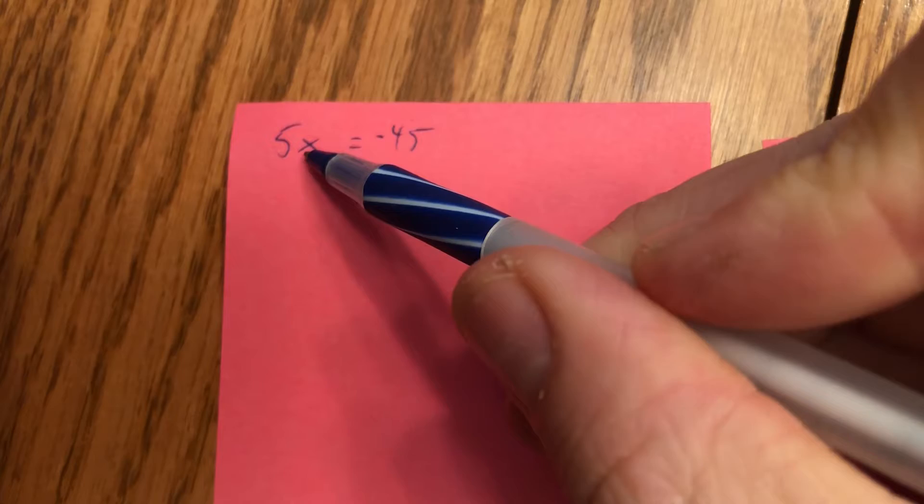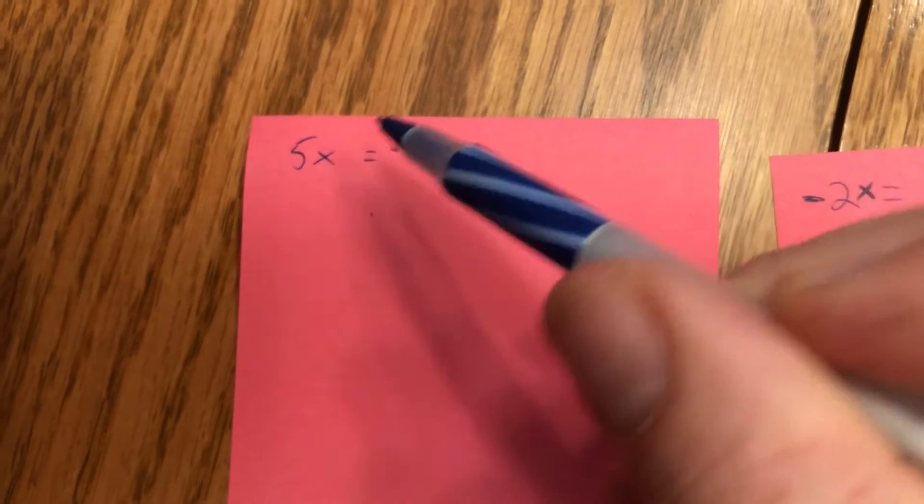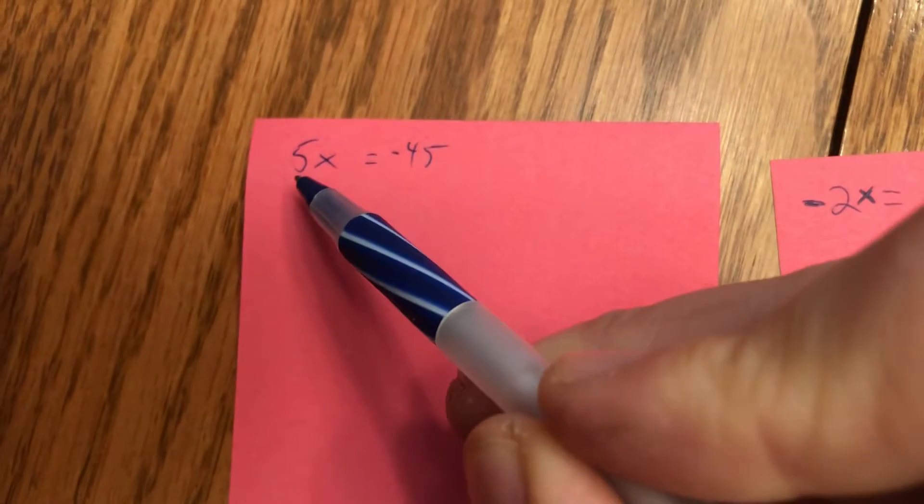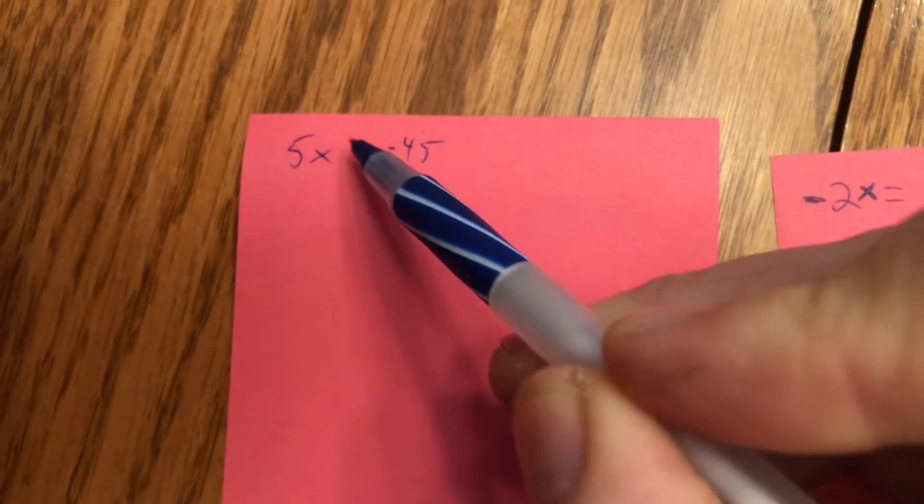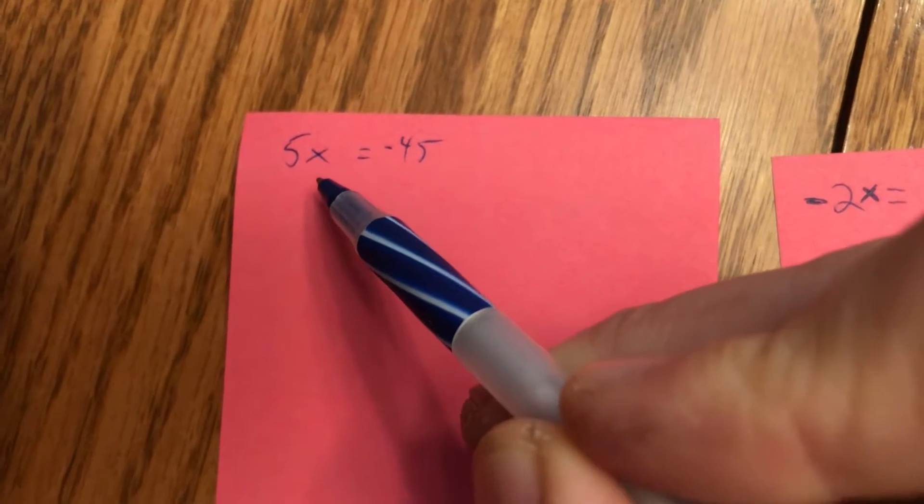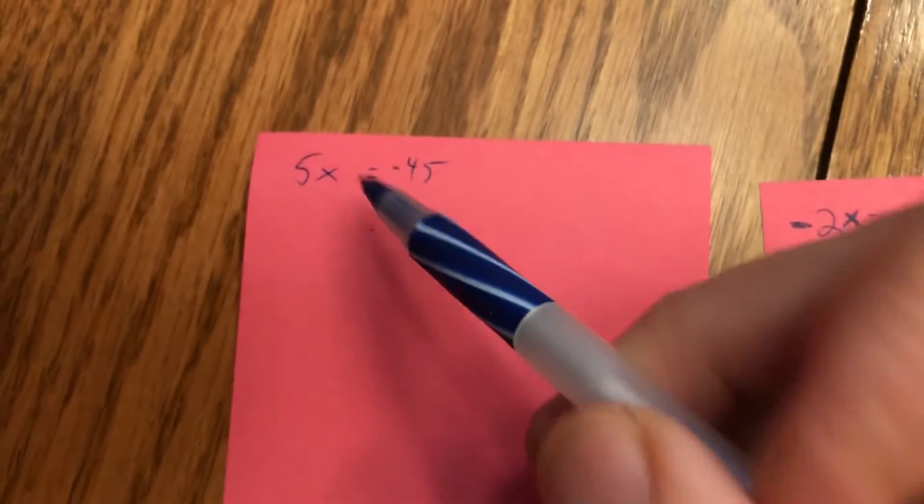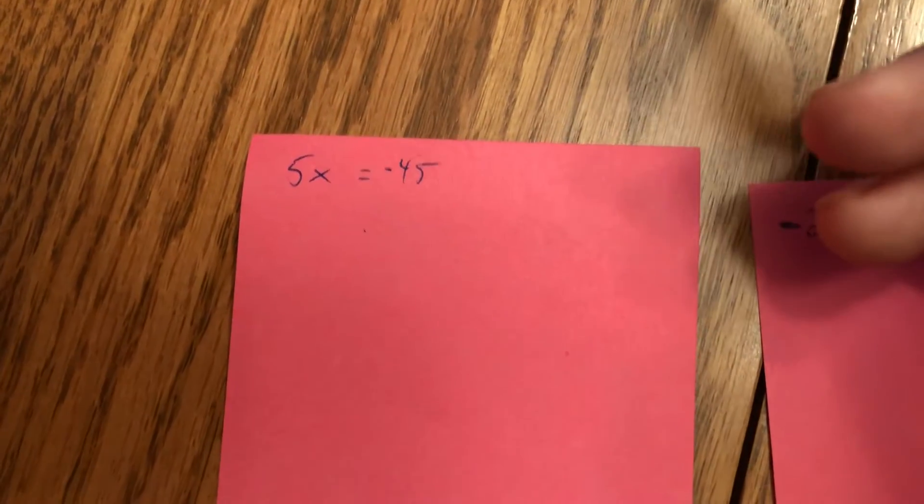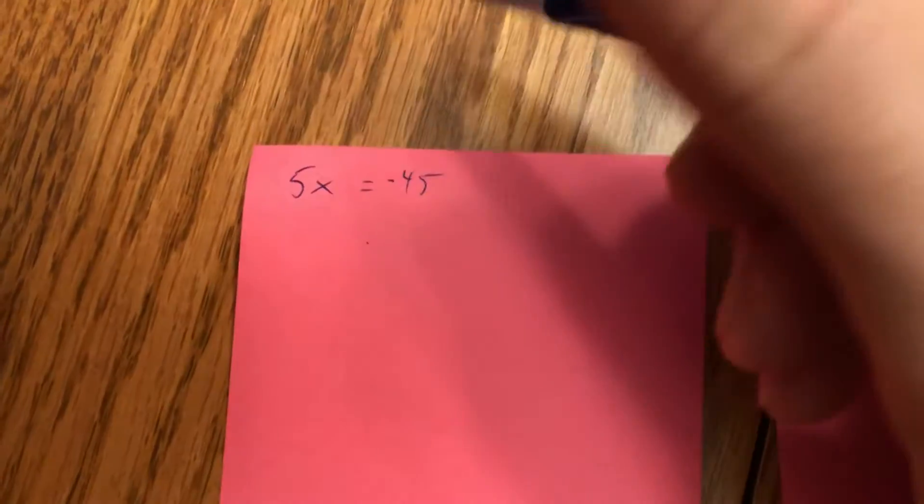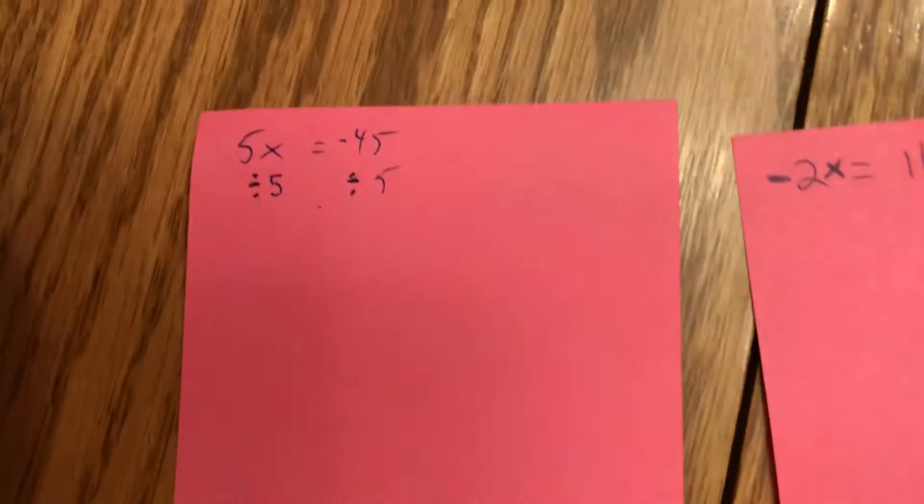Right now x is being times by 5. It's 5 times x. Whenever we have a coefficient touching a variable, the implied operation is multiplication. So it's 5 times x right now. So to get rid of times 5 times x, we have to use the inverse. What's the inverse or the opposite of multiplication? Well, that is division. There's two ways I can write this. One way that I prefer and want you guys to actually do. I'll do it the second way. This is the first way you can do it. And this does work. There's nothing wrong with this. This is completely accurate. I can write it like this.